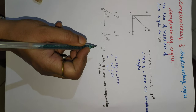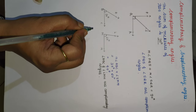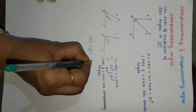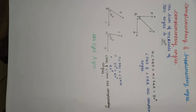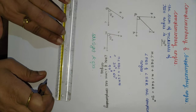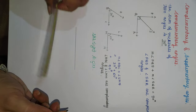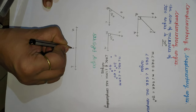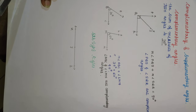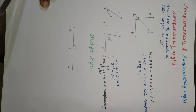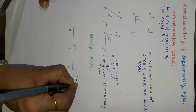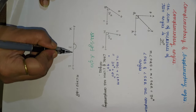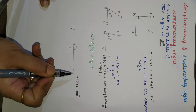Before moving to supplementary angles, we will revise in a couple of minutes about straight angles. Here, I will draw one line — suppose line XZ. Y is the point on the line. Then the measure of angle XYZ is 180 degrees, as it forms a straight line. So this is called the straight angle, and we will use this for supplementary angles.